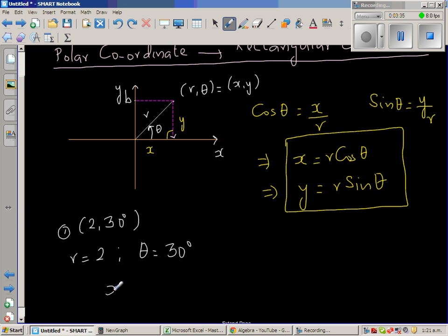So what is x? X is r cos θ, which is 2 times cos 30°. Cos 30° is half. We'll check this on a calculator, which is 2 times... no, cos 30° is √3 over 2, sorry.